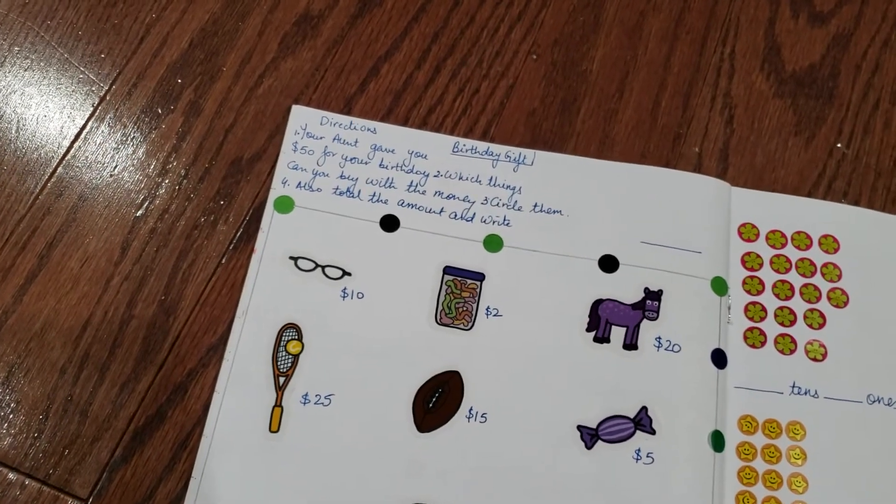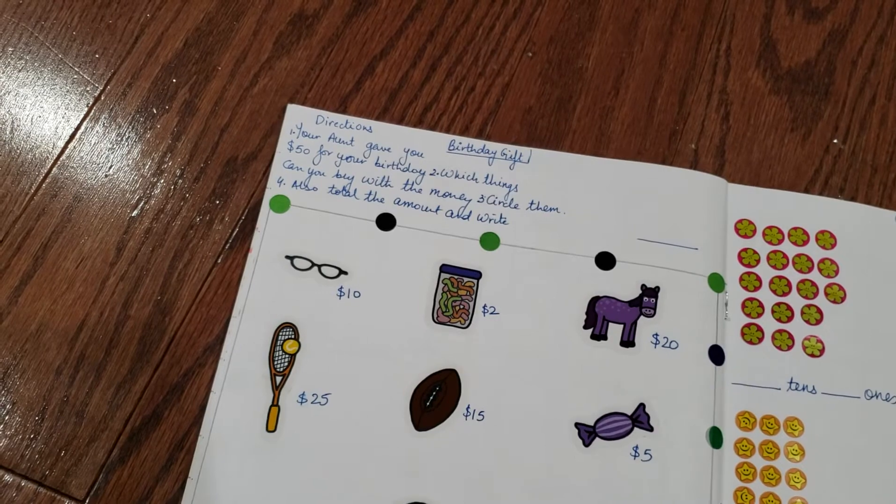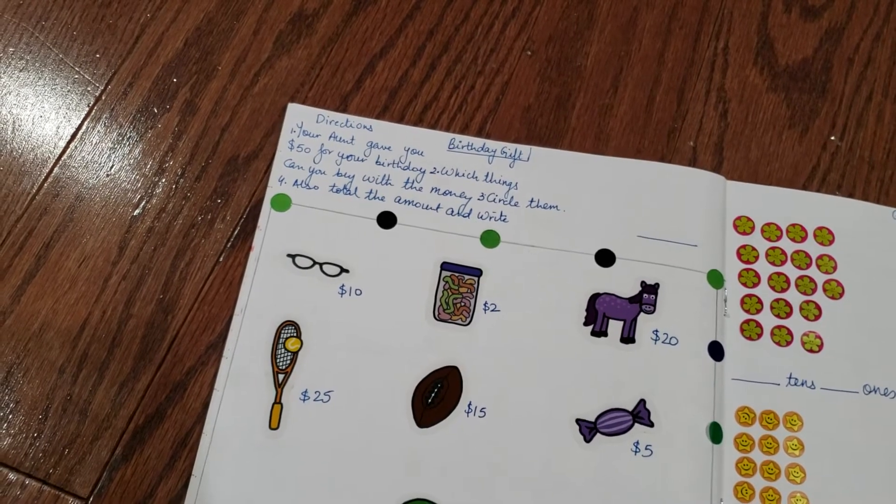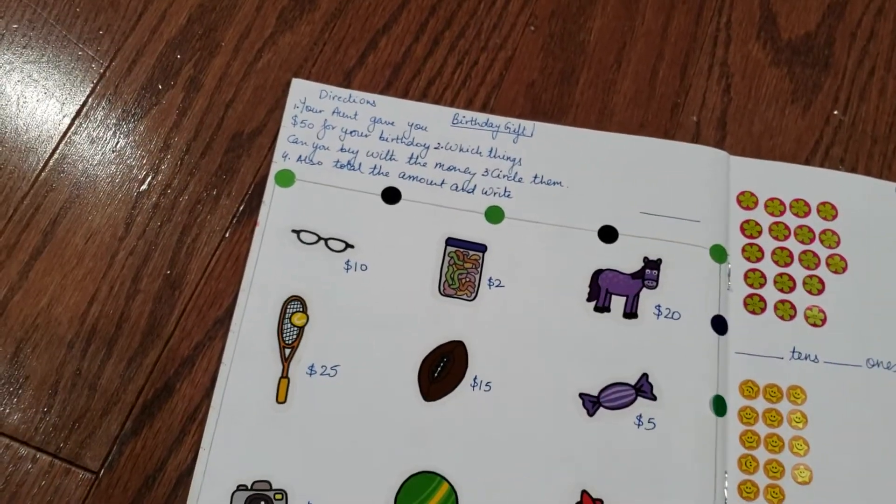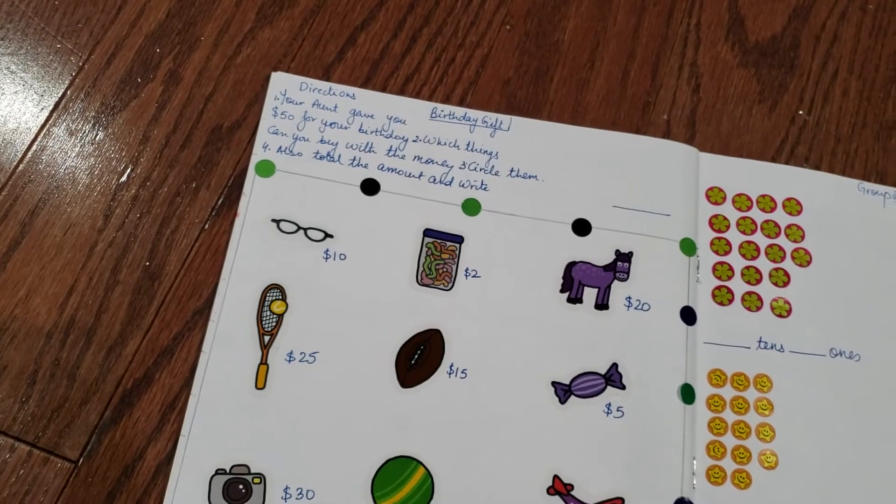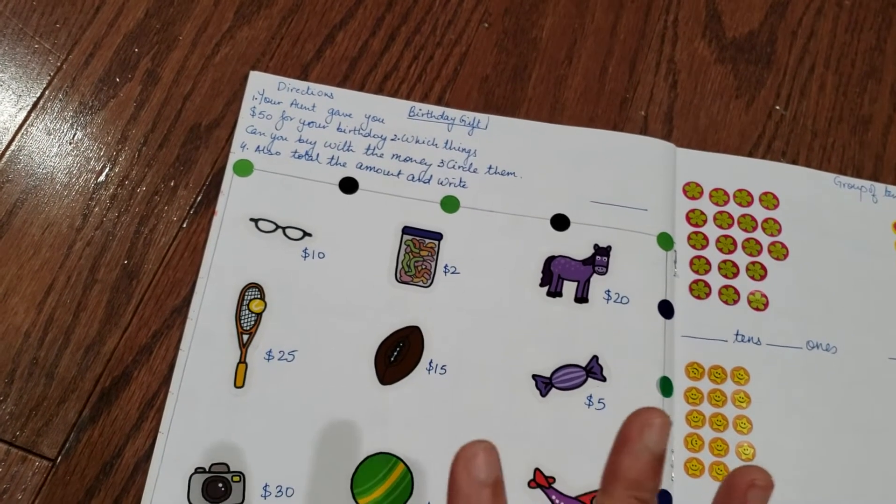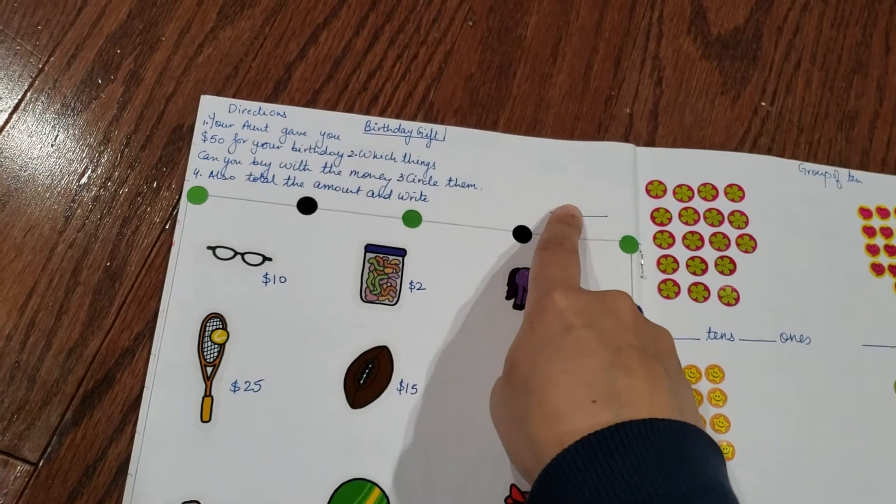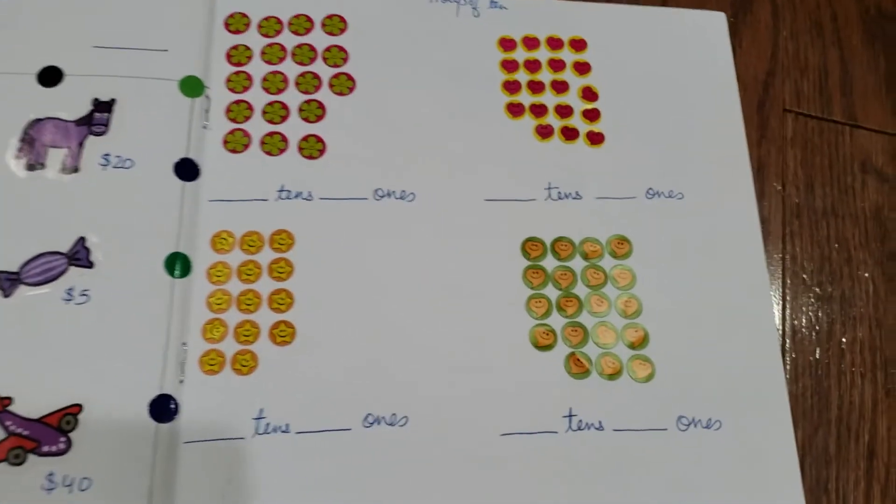Here it's all about money. 'Your aunt gave you $50 for your birthday - which things can you buy with 50? Circle them. Also total the amount and write here.' With $50, he has to see what all is he buying, and once his wish list is over, he needs to add up and write it here.